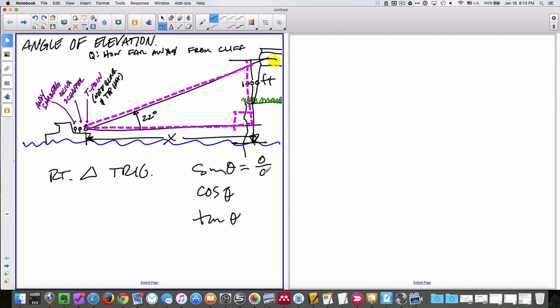Of course, in right triangle trig, sine is equal to opposite over hypotenuse. Cosine is adjacent over hypotenuse. And tangent is opposite over adjacent.